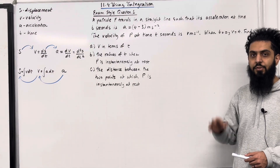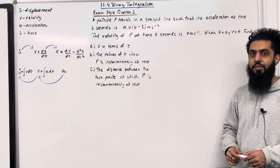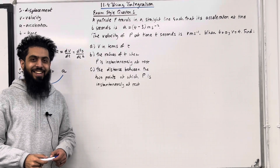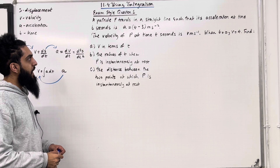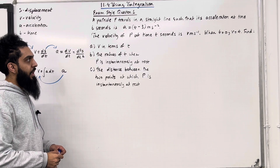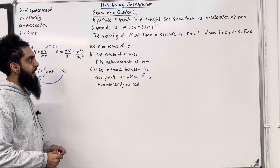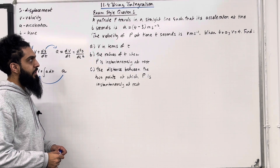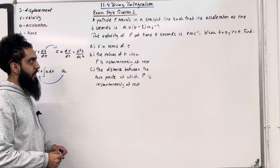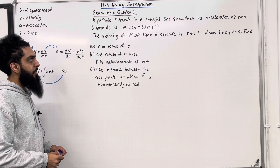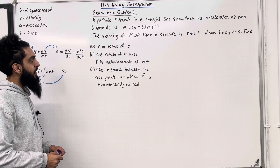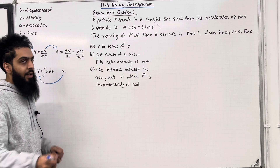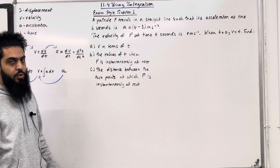These are the key facts of 11.4 using integration. I'll be implementing these key facts within three exam-style questions. Let's have a look at exam-style question 1. A particle P travels in a straight line such that its acceleration at time T seconds is given by A = (T − 3) m/s². The velocity of P at time T seconds is V m/s. When T = 0, V = 4. Find part A: V in terms of T.